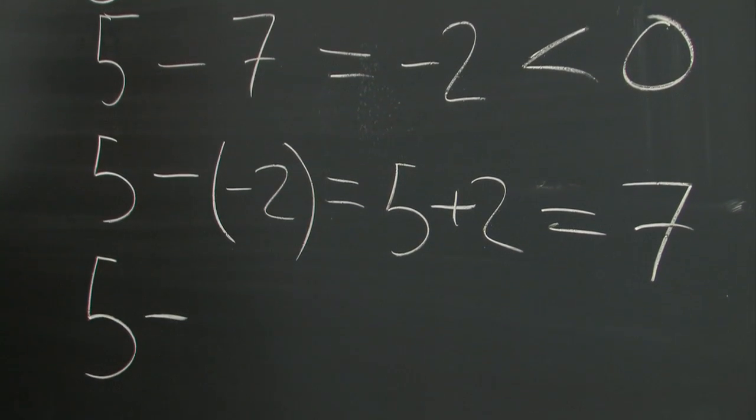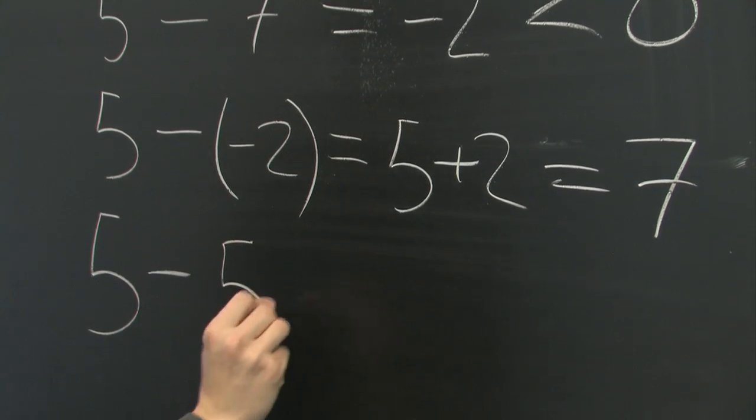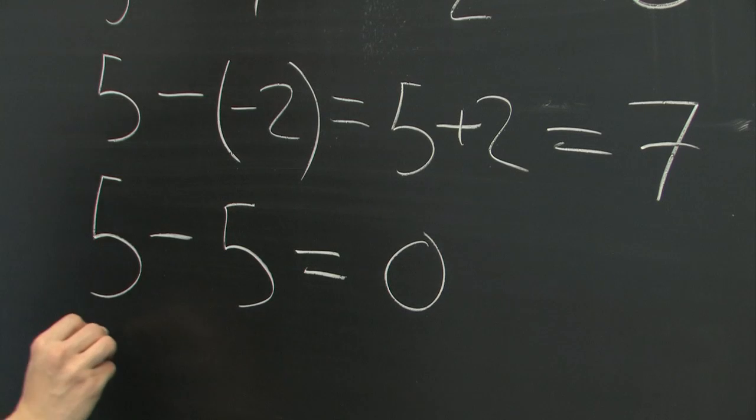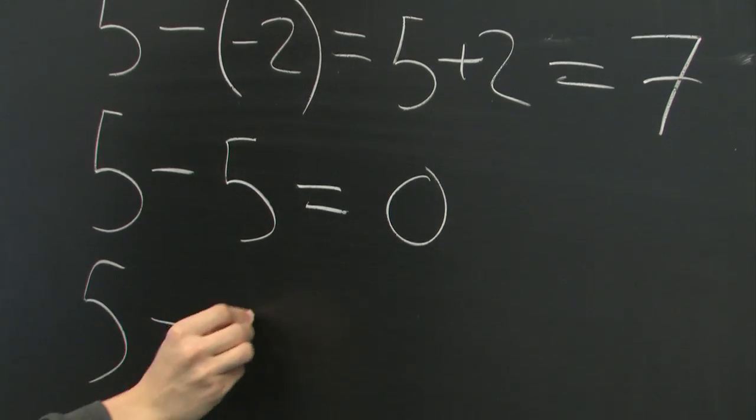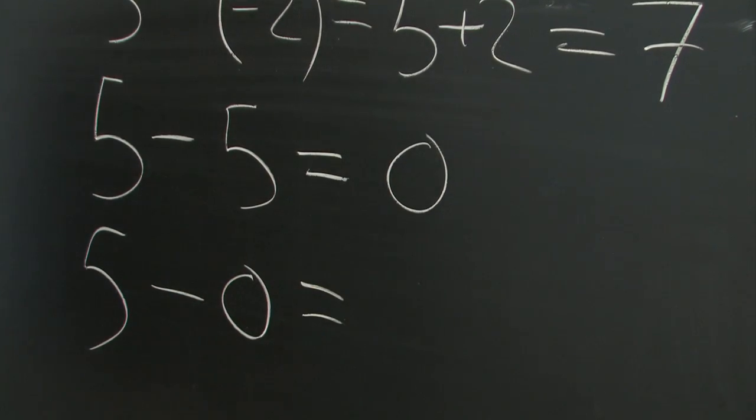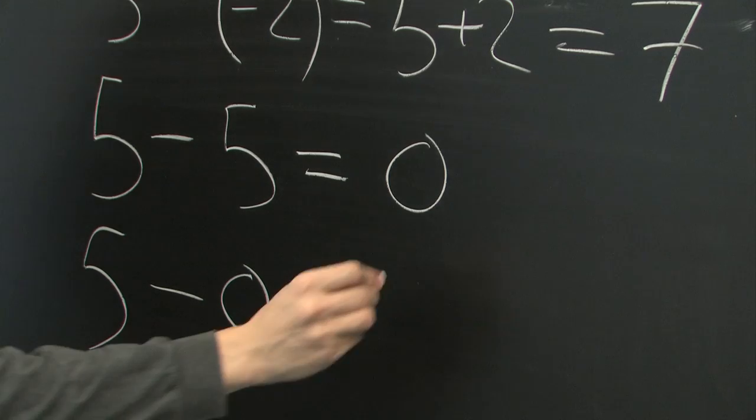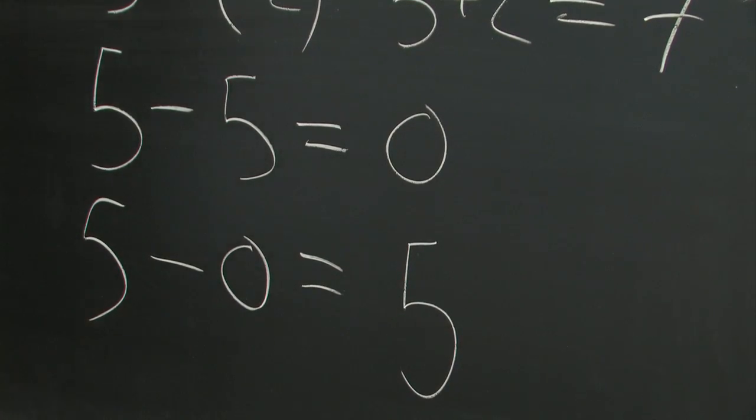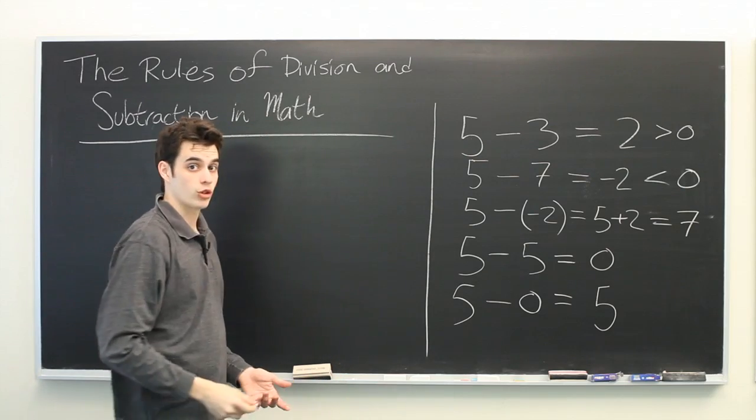If we subtract a number from itself, we always get 0. And if we subtract 0 from the number, we get that number right back again. So, those are some of our subtraction rules. How about division?